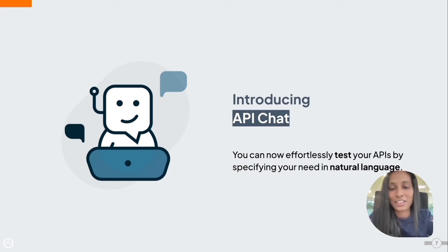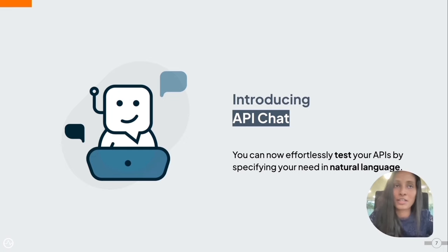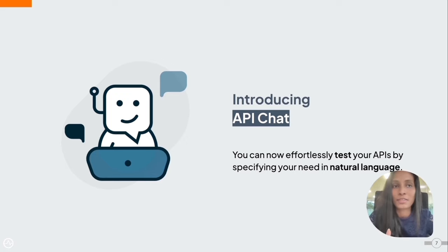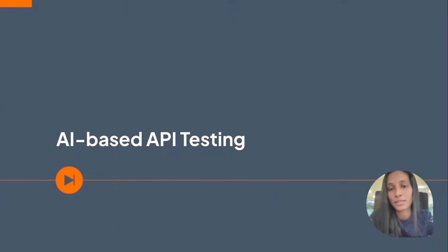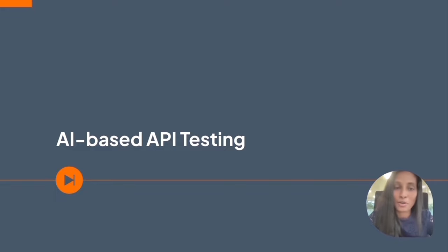Introducing API Chat. You can now effortlessly test your APIs by specifying your need in natural language. An API consumer comes into the developer portal with a simple use case — they simply want to try out the API. This feature would be a great fit for such a use case. They come in, give the use case, and we execute it on their behalf, so they can figure out if that API is going to cater to their needs. We have leveraged large language models — LLMs — to enhance the API testing experience.